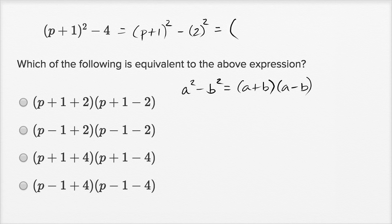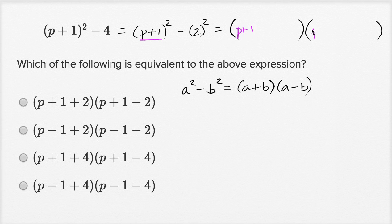This is going to be equal to — let me color code it — it's going to be the product of two things. It's going to be p plus one times p plus one, and then plus b and minus b. In this case b is two, so plus two and then minus two.